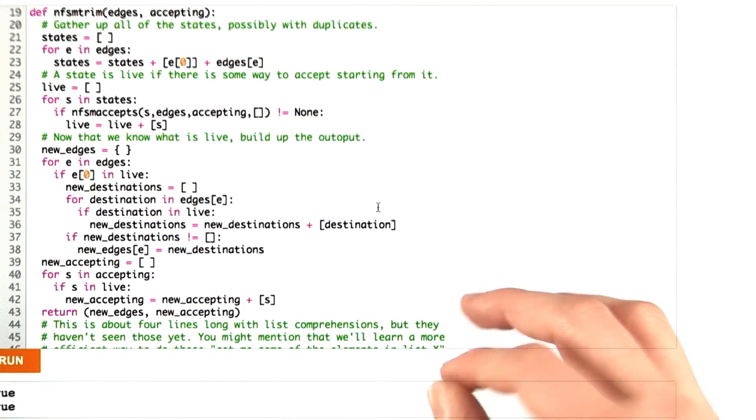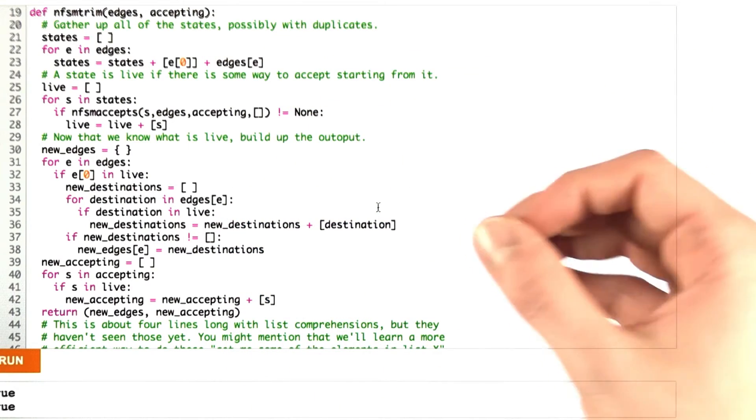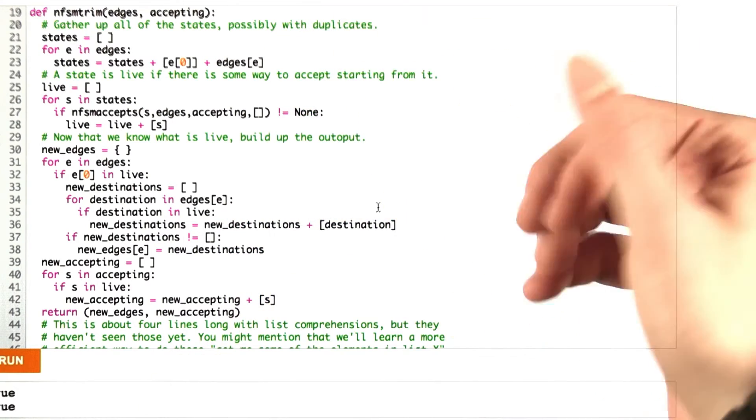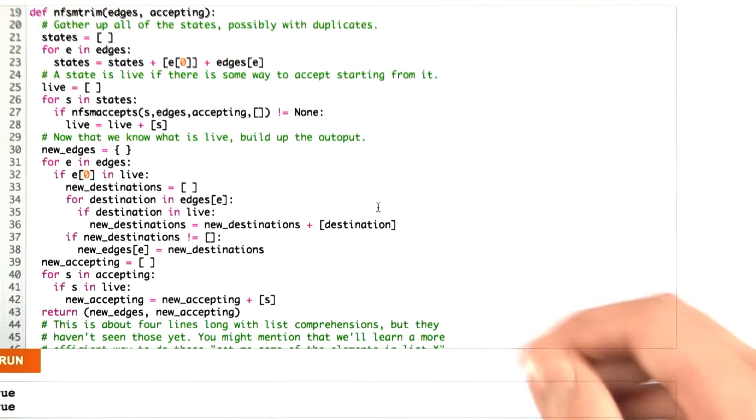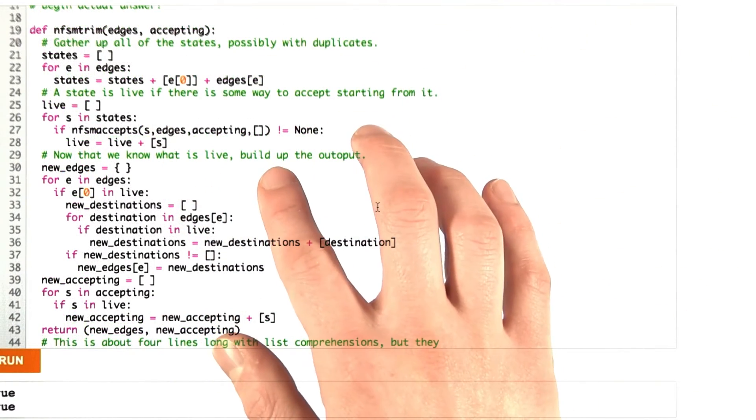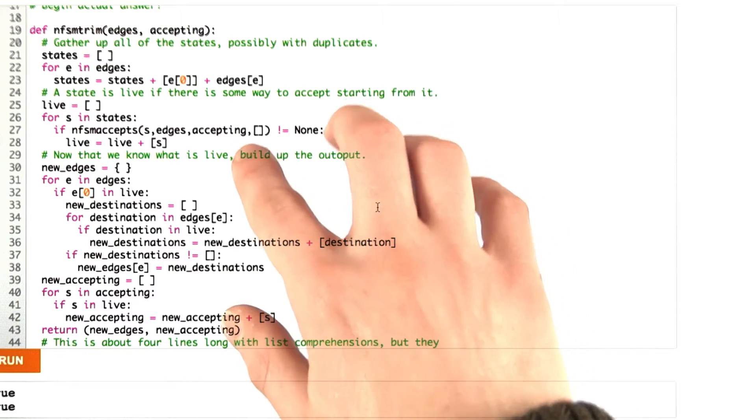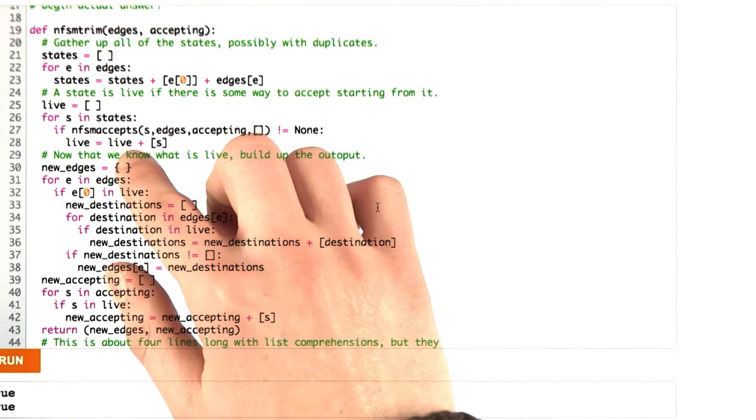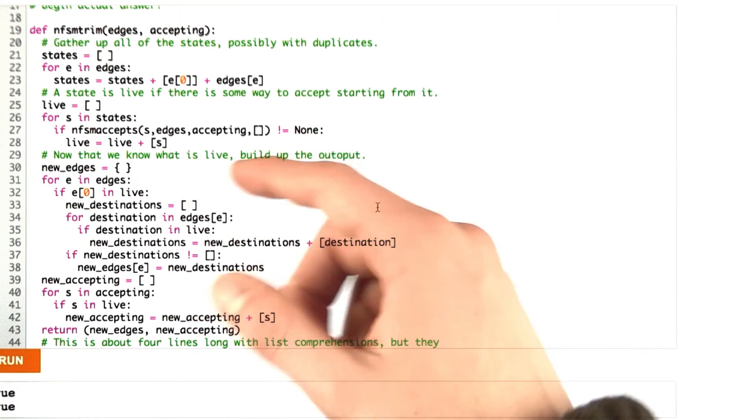just so I have a record of them. And it doesn't really matter if I have duplicates. It might slow down the trimming a bit, but I'm doing this to save time when I'm running the execution, not for the trimming so much. So for each state, if it's live, I can tell by running nfsm accepts. And if it is live,